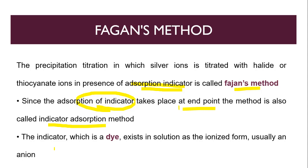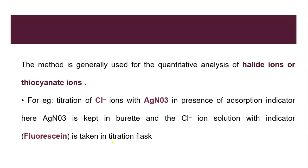Which type of indicator can we use here? It's a dye that exists in solution in ionized form — you can use it as an anion. This method is generally used for qualitative analysis of halides or thiocyanate ions, as we are titrating silver with halides such as chloride or thiocyanate ions.